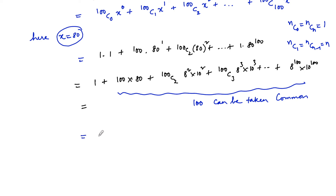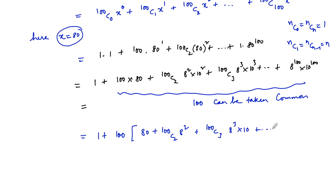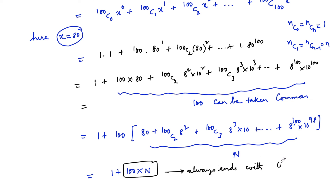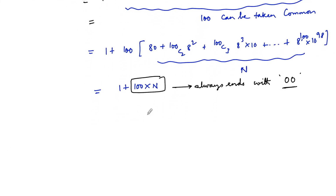So we can write the expression as 1 plus 100 times some number, which includes: 80 + 100C2 × 8^2 + 100C3 × 8^3 × 10 + ... + 8^100 × 10^98. Let us call this entire bracket n. So the expression becomes 1 + 100n, and 100 times any number always ends with 2 zeros.